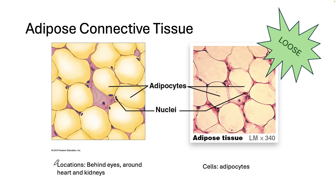Our next type of loose connective tissue is adipose tissue, where we store excess fat. It's also considered loose because there's quite a bit of space around the cells. This tissue helps to insulate against heat loss and protects by serving as padding against damage. The cells are called adipocytes, and you would find this tissue around the kidneys, behind the eyes, and around the heart.